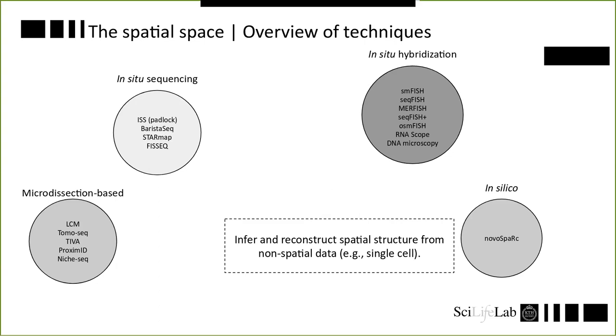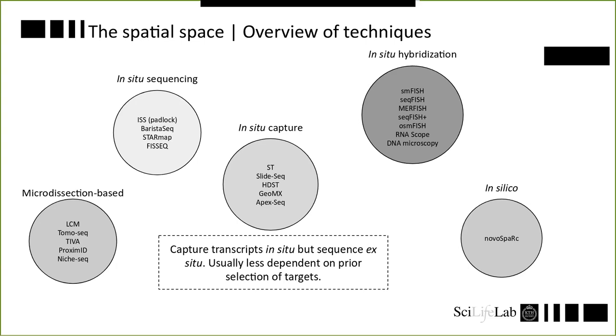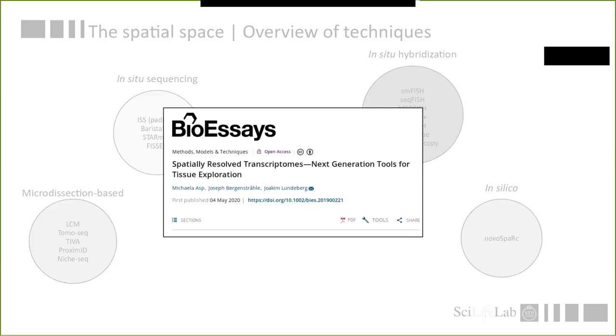We also have in-situ hybridization methods where we use labeled probes for specific targets and let them hybridize. This requires a priori defined targets. Before there was an issue with multiplexing capabilities, but due to clever expansion strategies and good decoding schemes, we've overcome this. We also have in-silico based methods, which are a curiosity. Here we try to infer and reconstruct spatial structure from non-spatial data, like single cell data. This is a cool theoretical approach. I actually grabbed this classification from a review that was recently published, so if you want to know more about the different techniques, I'd recommend checking that out.